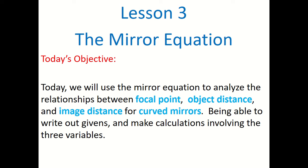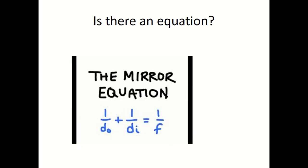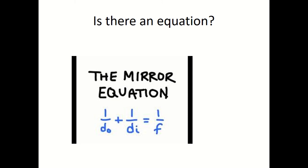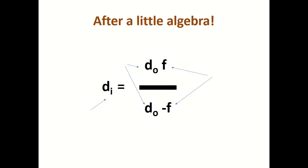We'll use the same terminology as last lesson. There is an equation called the mirror equation — also called the lens maker equation — and it looks like this: one over object distance plus one over image distance equals one over focal point. I'm going to rearrange this so that image distance equals object distance times focal point divided by object distance minus focal point.